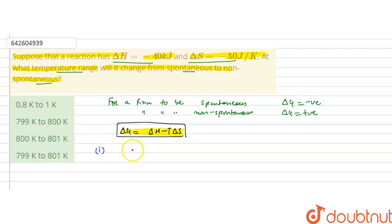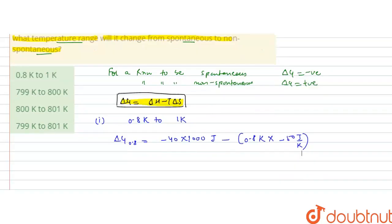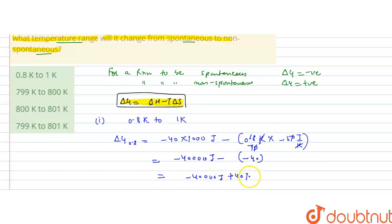Checking the first option: the range is 0.8 kelvin to 1 kelvin. At 0.8 kelvin, ΔG = ΔH - TΔS = -40,000 joules minus (0.8 K × -50 J/K). The T×ΔS term gives +40 joules, so ΔG = -40,000 + 40 joules, which is a large negative value because -40,000 is much bigger than 40. So ΔG is negative, meaning the reaction is spontaneous at 0.8 kelvin.